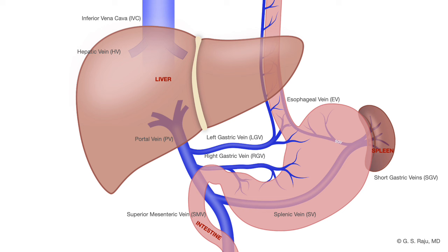So let us look at the flow. The flow is from the intestines through the mesenteric veins — the portal venous system — to the liver, and from the liver via the hepatic veins and inferior vena cava to the right atrium.